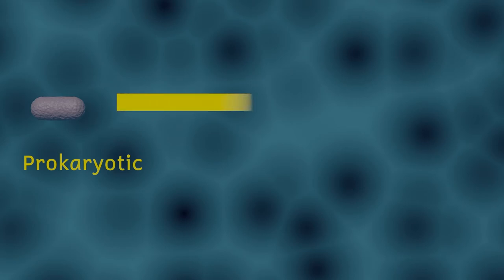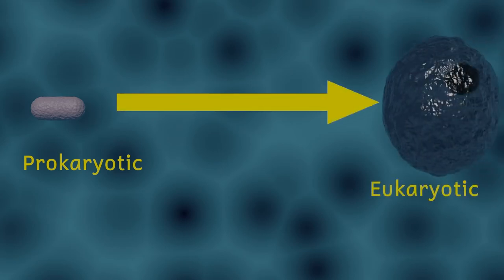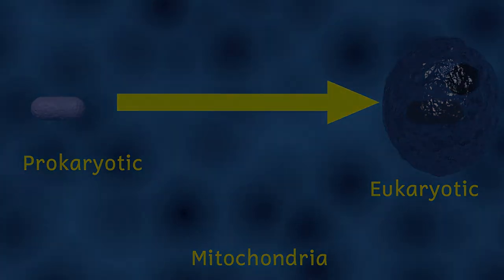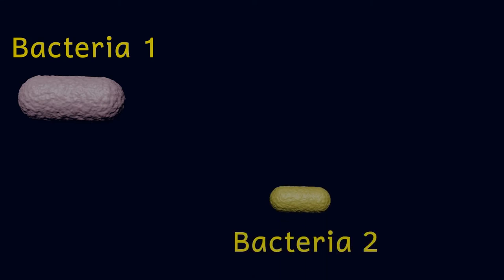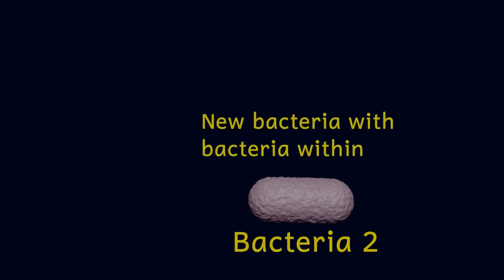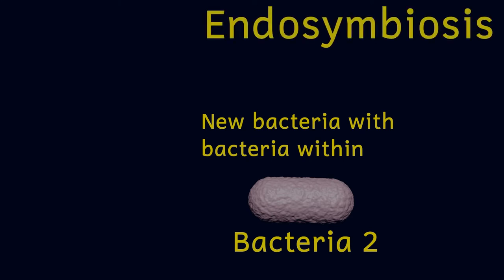Bacterial cells developed first and eukaryotic cells evolved from bacterial cells. So where did mitochondria come from? How did we get from bacteria to eukaryotic cells with these mitochondria inside? The most likely course of evolution is that mitochondria were once a different species of bacterial cell that somehow formed a symbiotic relationship with another type of bacterial cell — one bacterial cell engulfs another cell and the two cells now live together in mutual benefit.